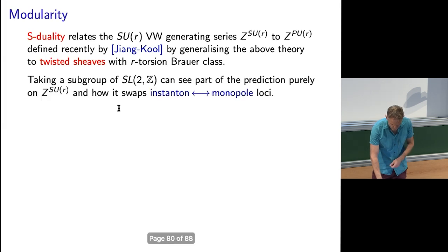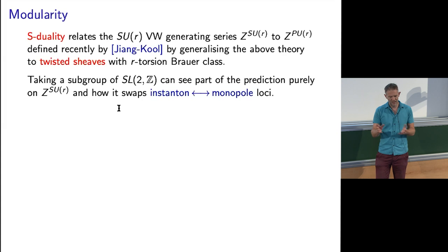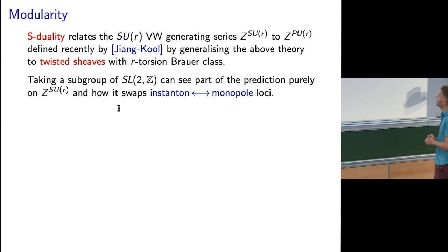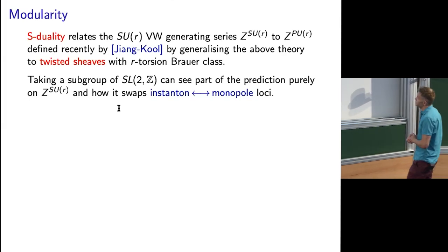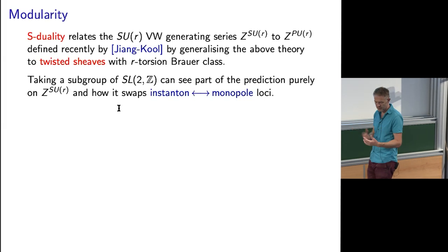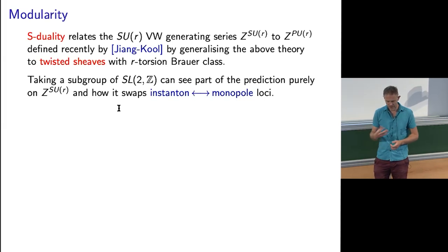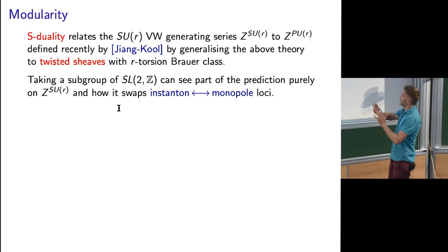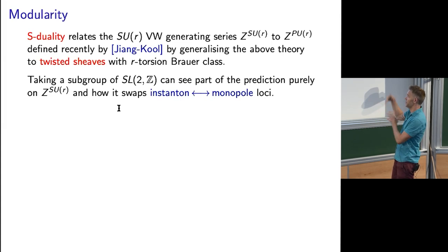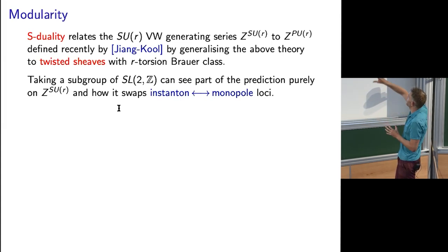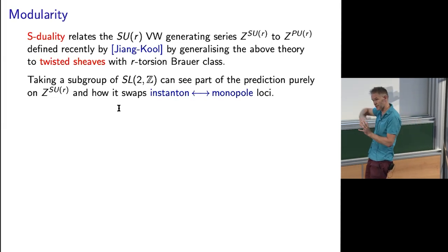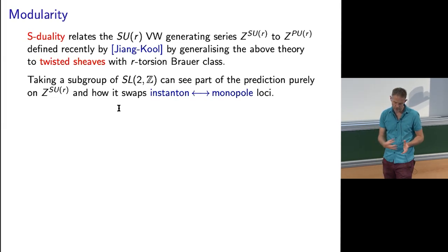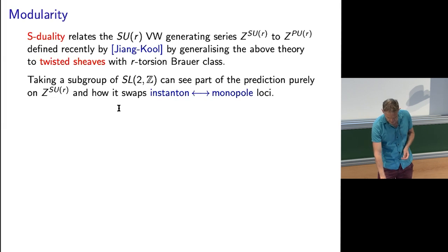SU(r) is Langlands dual to PU(r). There's an SL(2,Z) acting on the whole theory, supposedly. But you can pass to a judicious subgroup of it, and when you do that, you can see it should just swap the SU(r) theory with parts of itself. So I don't really need to deal with PU(r) theory if I pass to a subgroup of SL(2). For that subgroup I can explain how it swaps the instanton and monopole loci.